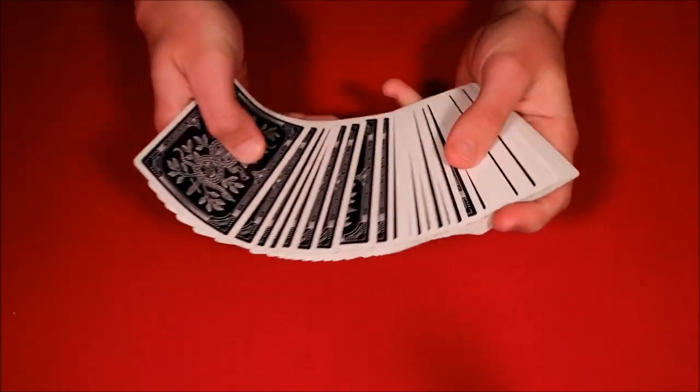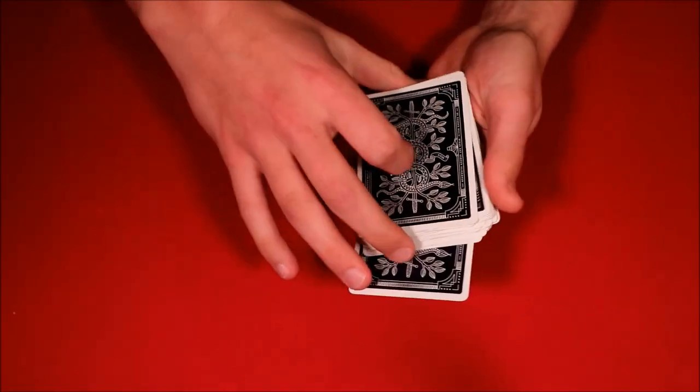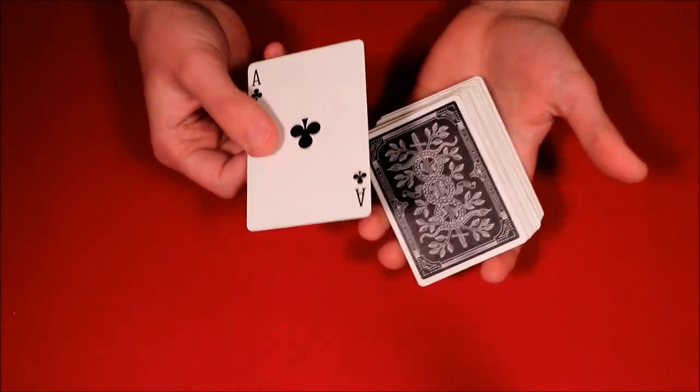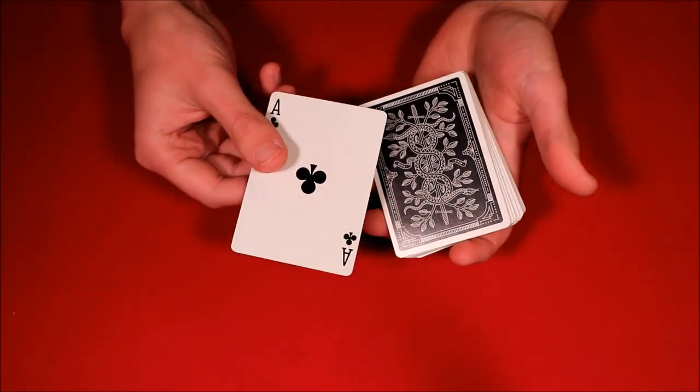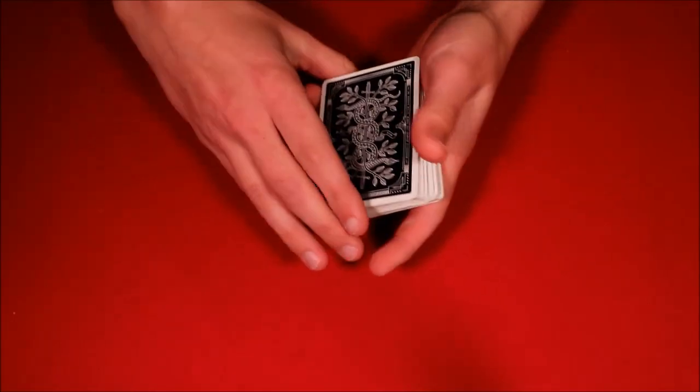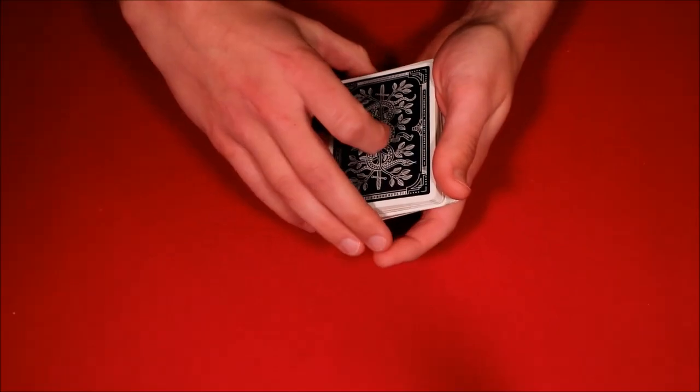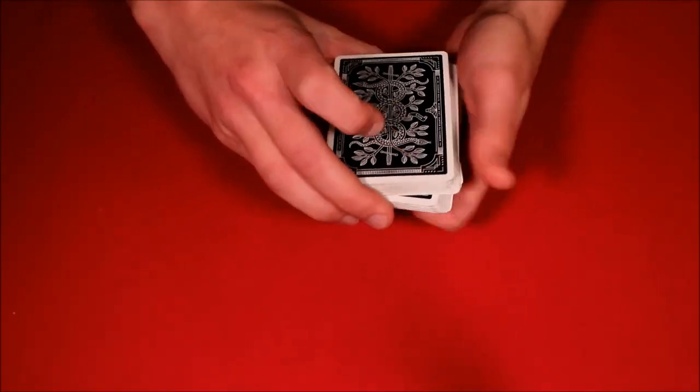For now I just want to show you guys a super simple way that you can control a spectator's card. Usually I might do a double undercut in pretty much every single one of my videos, but I'm going to show you a really casual way of taking the ace of clubs, their selected card, putting it right into the middle of the deck but very casually having good control of the card.